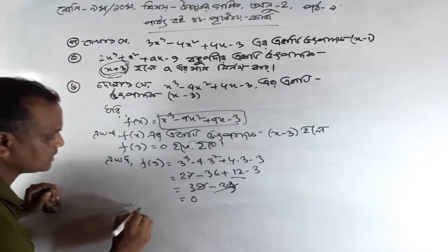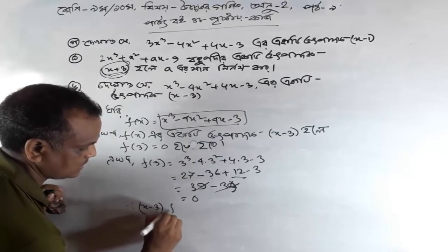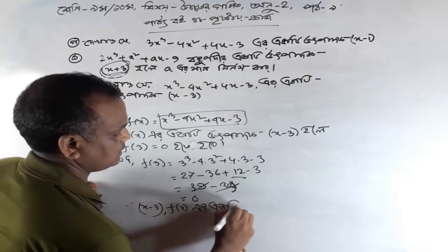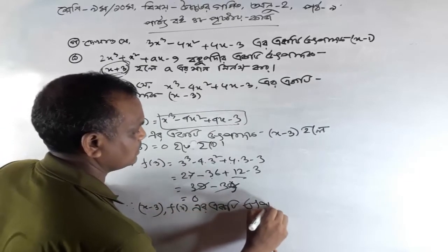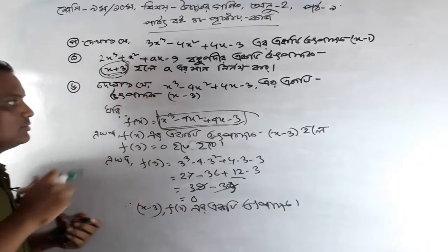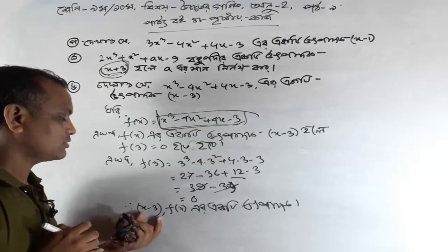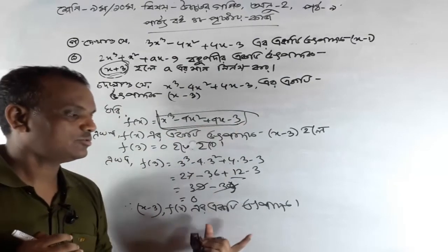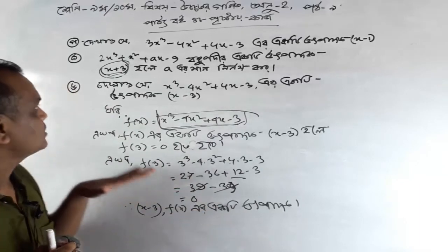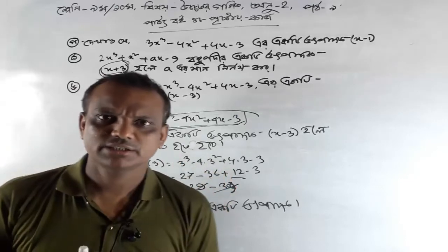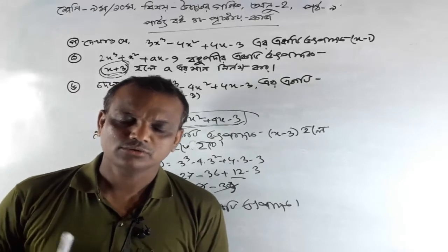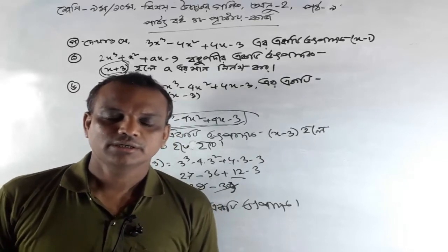This is x-3, f(x). We are obtaining that x-3 equals 1. This is f(x) is n — nothing to do with the power. Thank you so much for joining us and we'll see you in the next video.